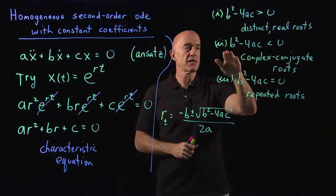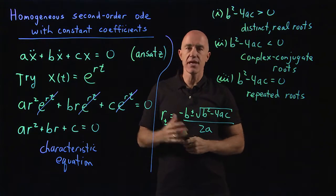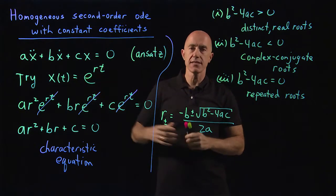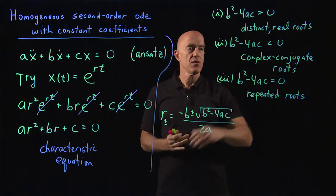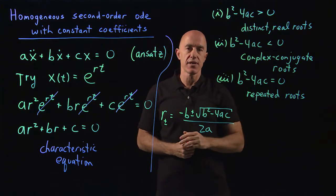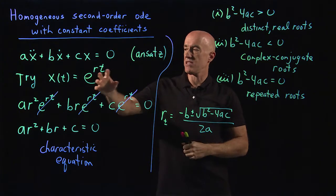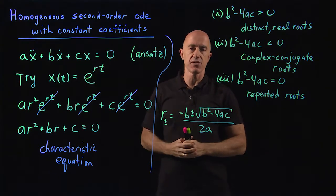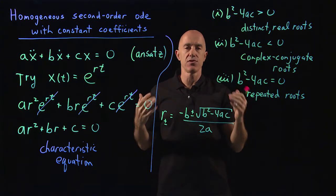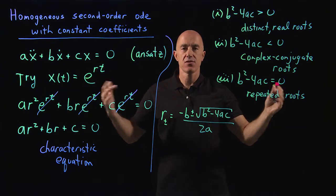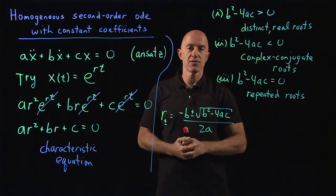We can have complex conjugate roots, in which case we have two complex exponential functions. We will learn how to deal with that to get two real functions. Or we can have repeated roots, in which case we only have one exponential function. And we're going to have to do some magic to get the second solution.